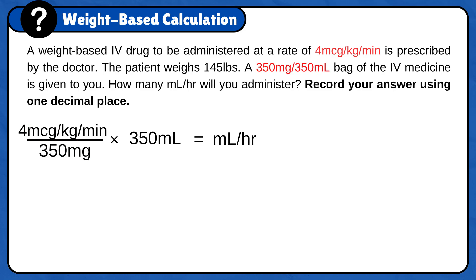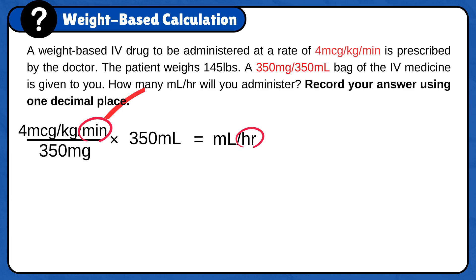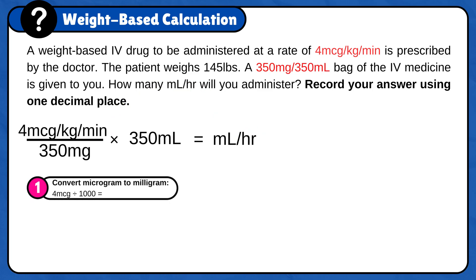The patient's weight was given in pounds and needs to be converted to kilograms to calculate the prescribed dose. And minutes need to be converted to hours because the answer needs to be in hours. First, convert micrograms to milligrams. Notice that you are converting from a smaller unit, microgram, to a larger unit, milligram, so you will have a smaller number.